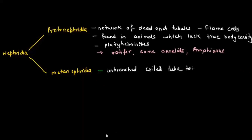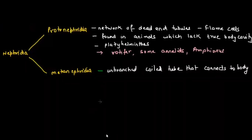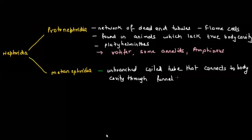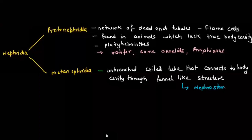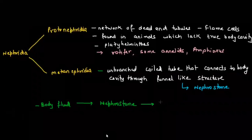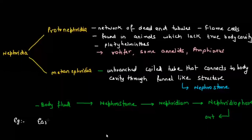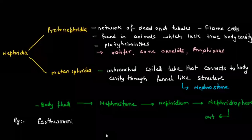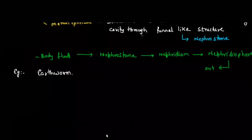Metanephridia are unbranched coiled tubes that connect to the body cavity through a funnel-like structure called the nephrostome. The body fluid passes into the nephrostome, then into the nephridium, then through the nephridiopore, and finally out of the body. An example of metanephridia is the earthworm, which is a true segmented (metamerically segmented) animal. Remember: protonephridia in platyhelminthes, metanephridia in earthworm.